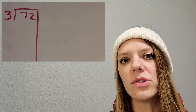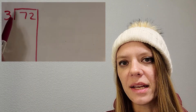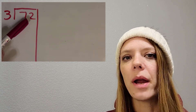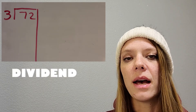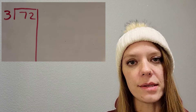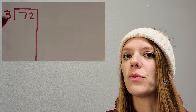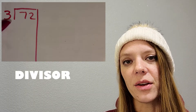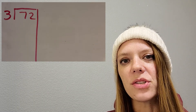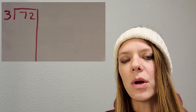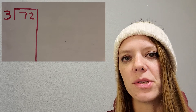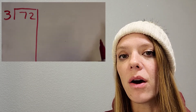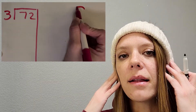The partial quotients strategy — I like to think of it as a big seven that I drew on my whiteboard. The number we are separating out is called the dividend, so that 72 goes right on the inside. I'm dividing it between three friends, so my three is called the divisor and it goes on the outside. Then we just start thinking about three groups of different friendly numbers — numbers that are easy to work with in your head, like ten.